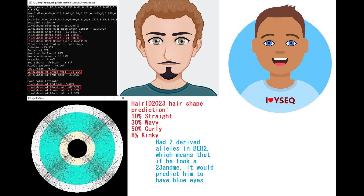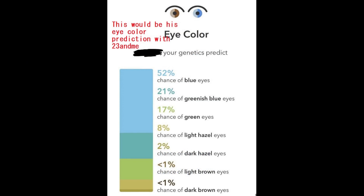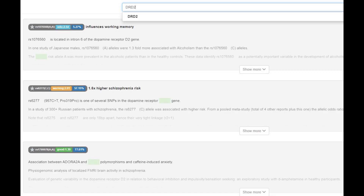On the right you see the Wysec prediction for this individual, which is completely deranged — I don't think anybody nowadays looks like this. An interesting piece of trivia is that this individual had two derived alleles in the BH2 mutation, which means a 23andMe test would predict him to have blue eyes. His genotype in DRD2 was quite typical for South Asians and non-Europeans. In the Pro319Pro SNP he had GG, which means higher risk of schizophrenia, was not a no-go learner, and had a higher amount of dopamine D2 receptors.